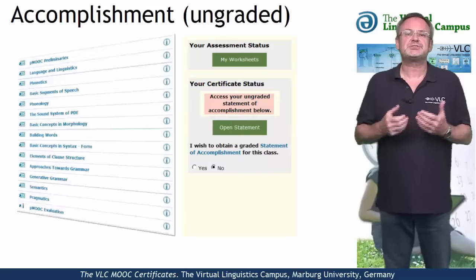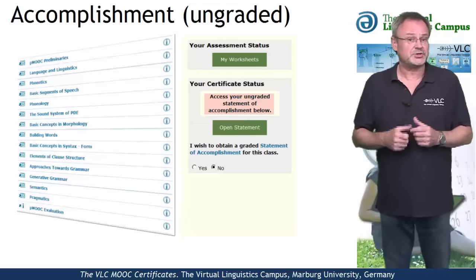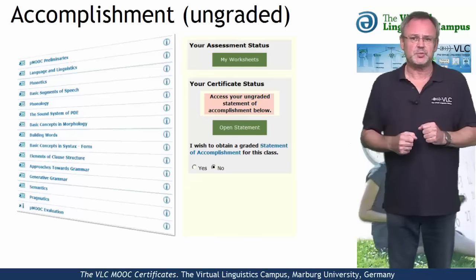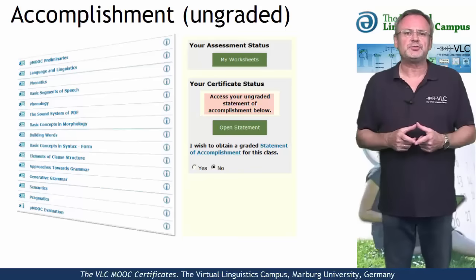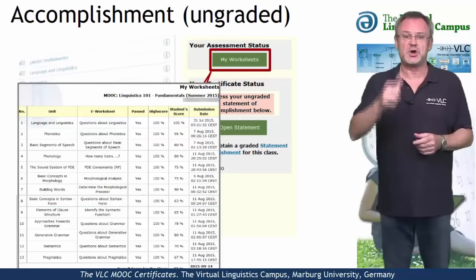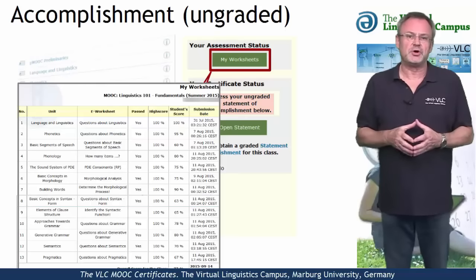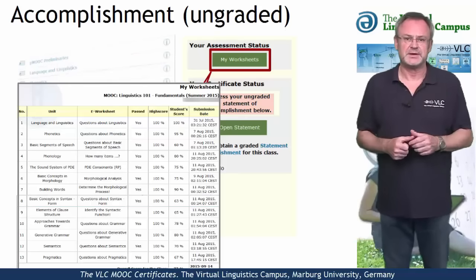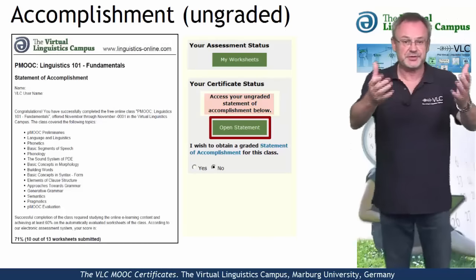The second option is the statement of accomplishment, also for free and issued by the Virtual Linguistics Campus. To be given such a certificate, we not only want your regular participation, but we also want you to do the mastery worksheets, our electronic tests, one for each unit. And we want you to achieve an overall score of all the worksheets of at least 60%. A simple click on the open statement button and the certificate is yours.